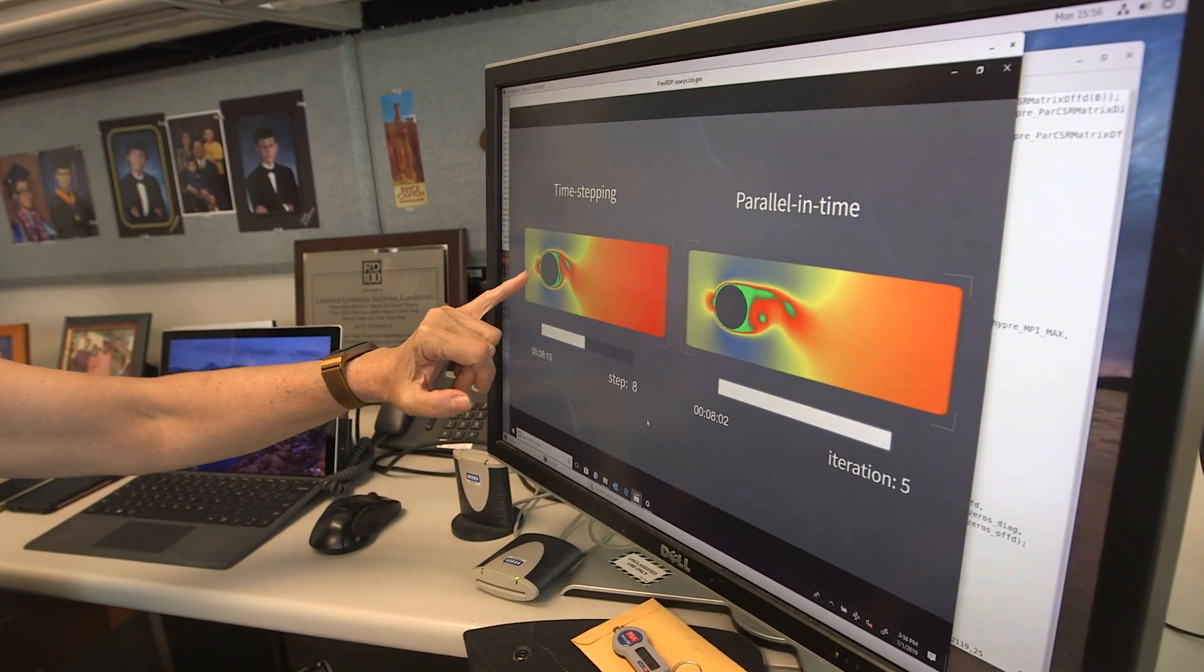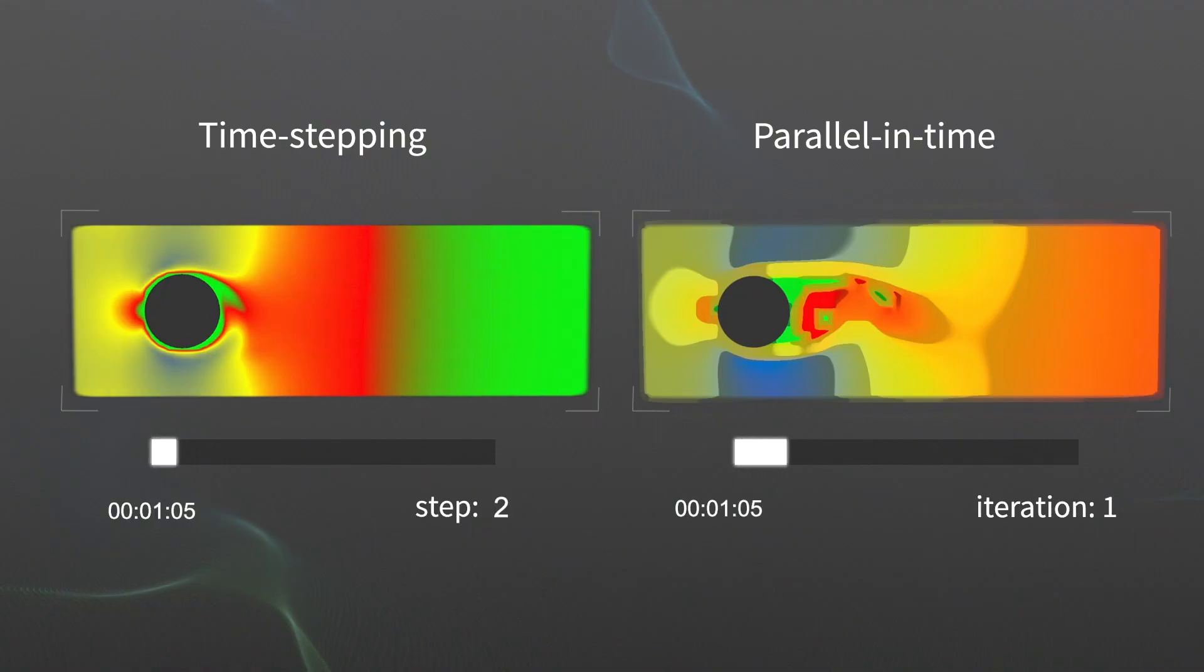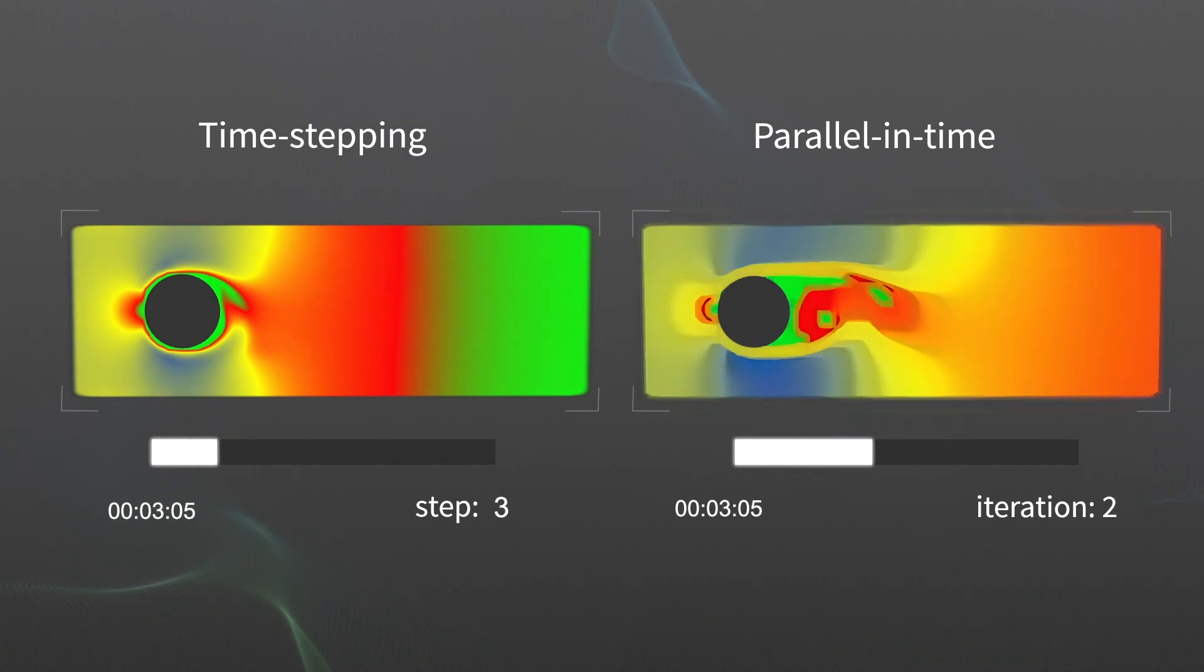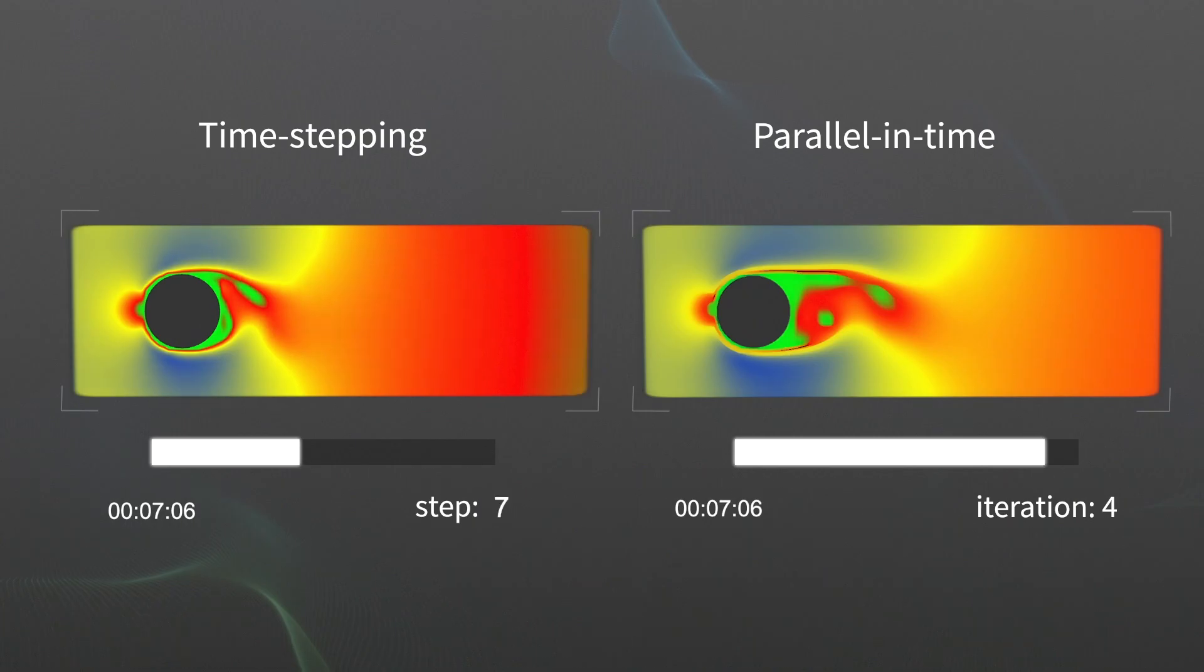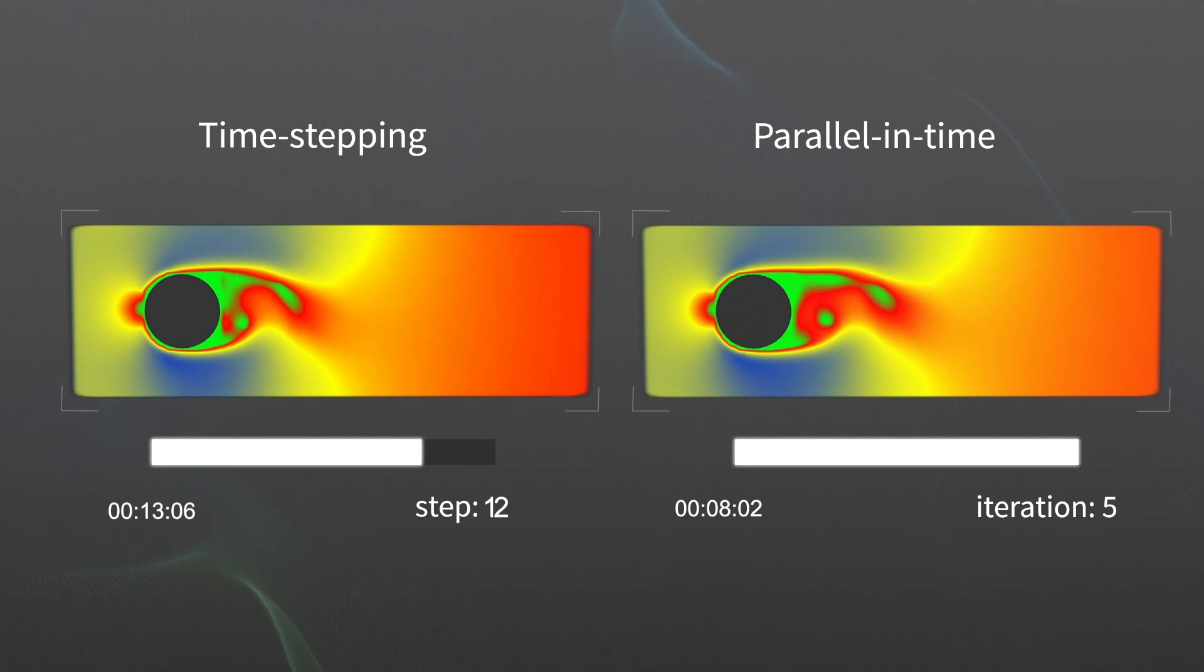So what we do here, since we are experts in multi-grid methods, we actually find ways to apply a multi-level idea to the time dimension. The problem here is flow around a cylinder. So on the left you see what happens when you use a traditional time-stepping method, and on the right you see the parallel in time method. You can already see some of the vortexes developing much earlier, and we're done within five iteration steps, where the left side is still going.